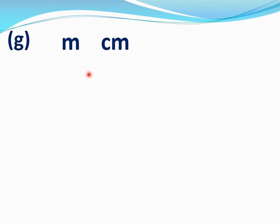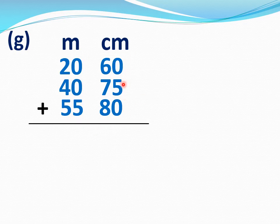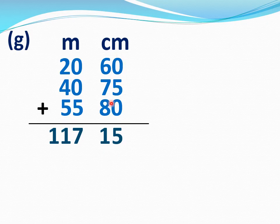G part: write down meter, centimeter. Write first number: 20 meters 60 centimeters. Write second number: 40 meters 75 centimeters. Write third number: 55 meters 80 centimeters. Now add: 0 plus 5 plus 0 is 5. 6 plus 7 plus 8 is 21, write 1 and carry 2. 2 plus 0 plus 0 plus 5 is 7. 2 plus 4 plus 5 is 11. Answer is 117 meters 15 centimeters.